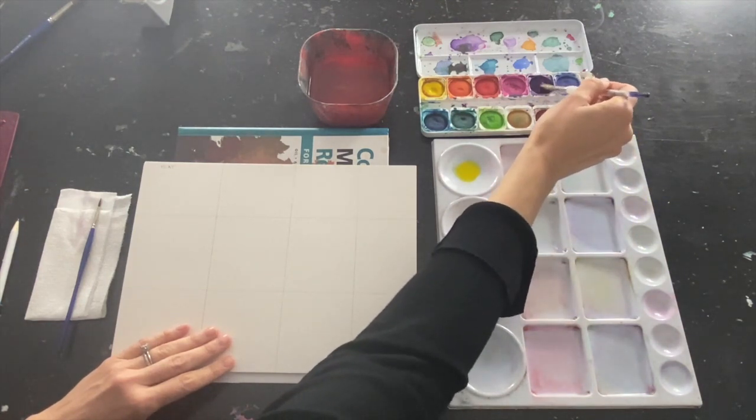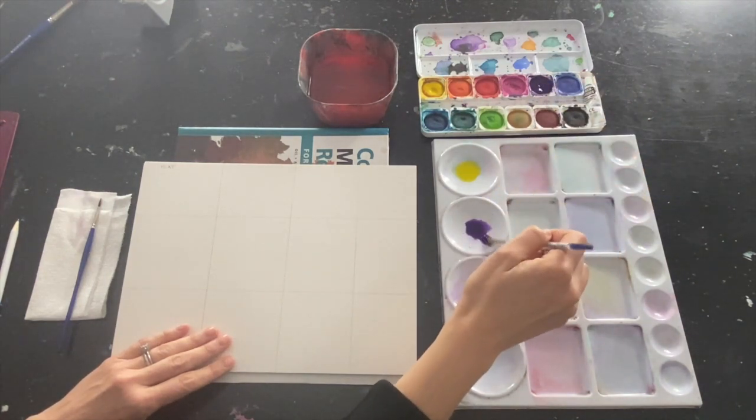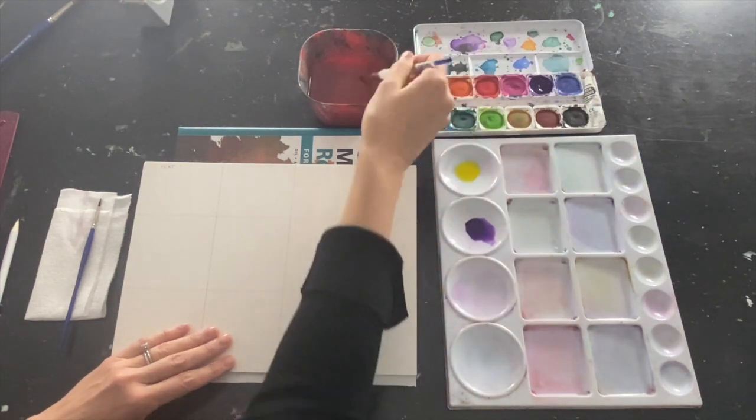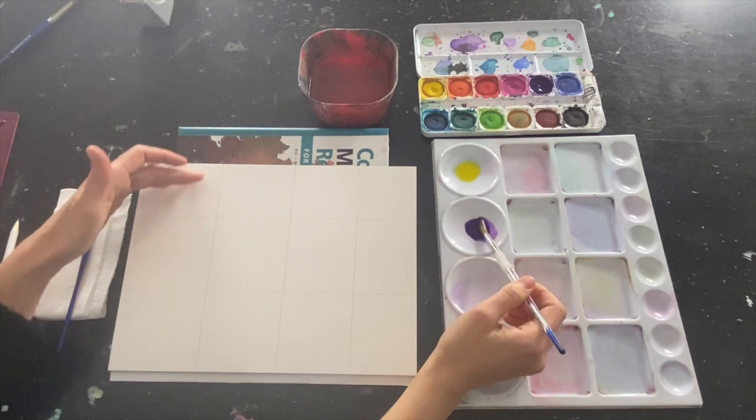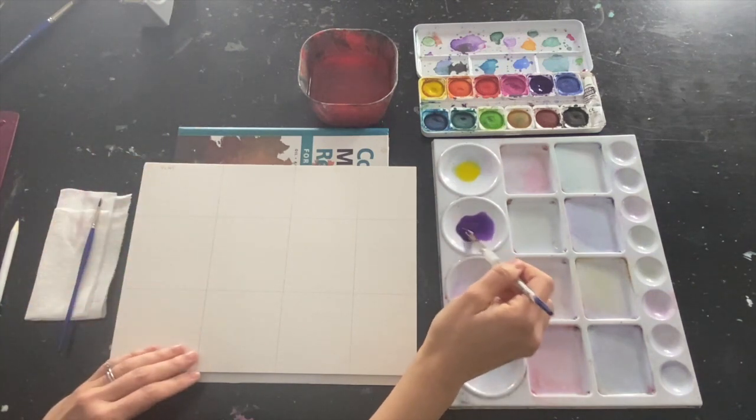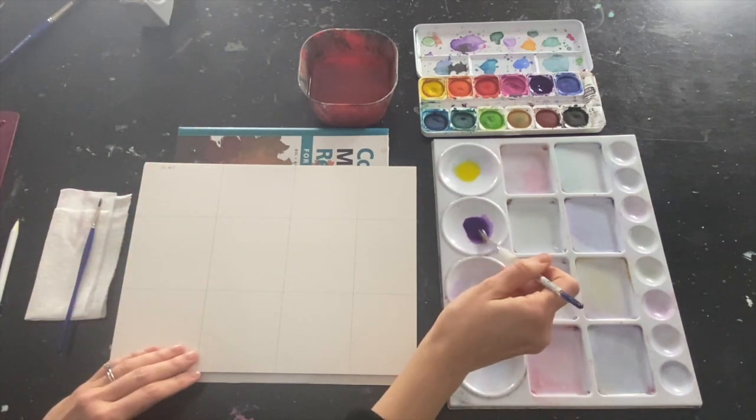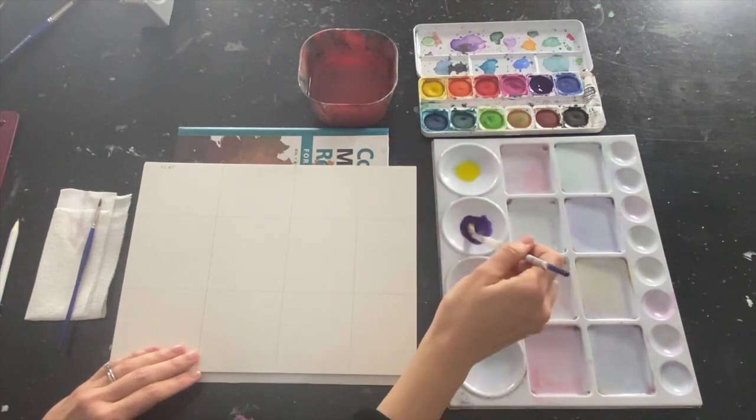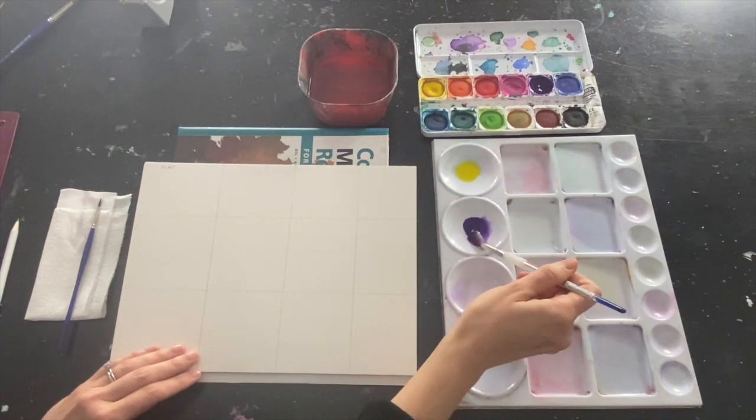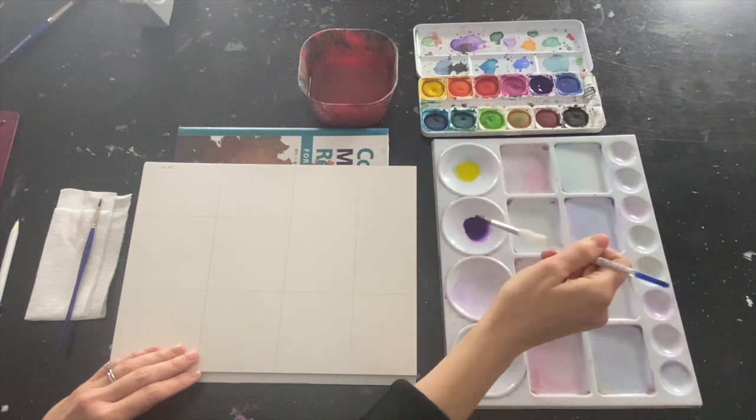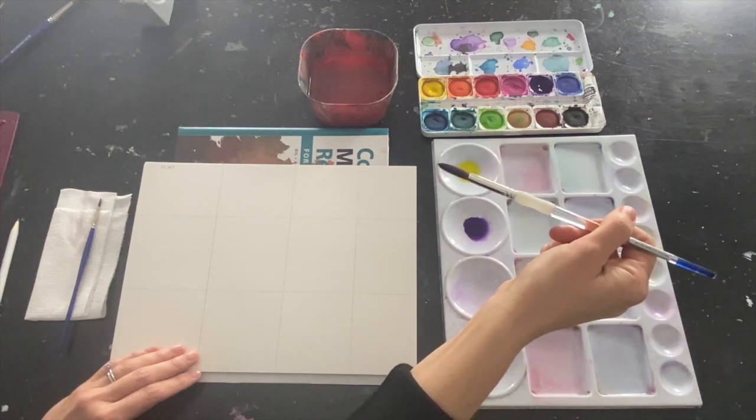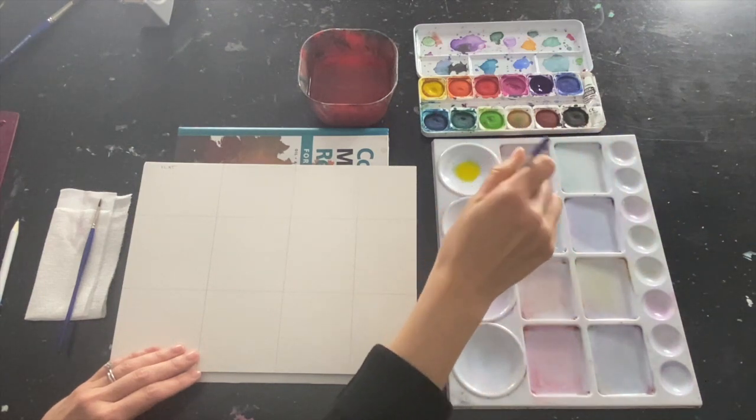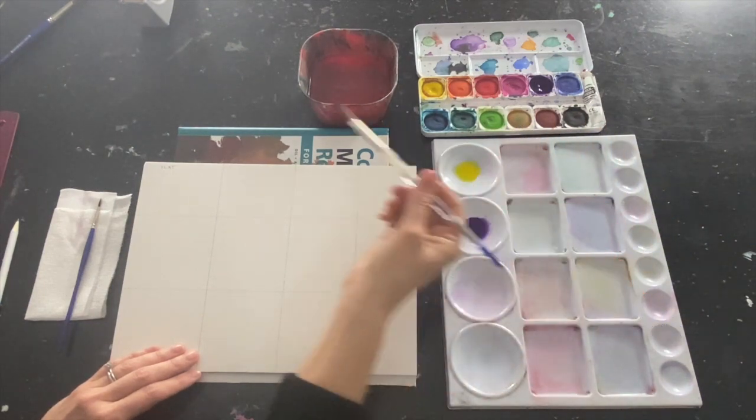Now remember what I had said about having more paint rather than less paint? This is where it's very important. If you're covering a full box with one shade of purple, you're going to want to make sure you have enough paint to cover that whole box. So I'm going to load up my brush. I want it really nice and full. Notice how you can load it up without it dripping, but there is a lot of paint on there.